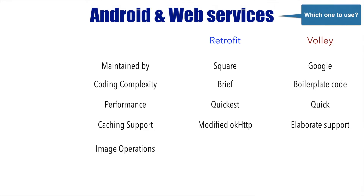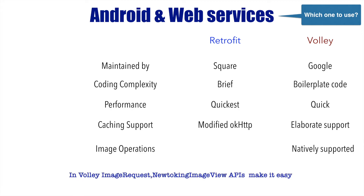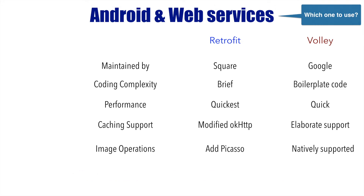Moving forward — image operations: downloading images, uploading images, caching images. This is one of the very common and most complex operations in Android API integrations. Once again Volley does a pretty good job, because pretty much everything is provided natively by Volley. But in the case of Retrofit, you have to use another library called Picasso to do most of these operations. So in that way Volley is a one-stop solution, but that may not be the case with Retrofit.